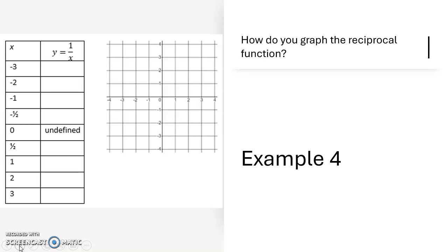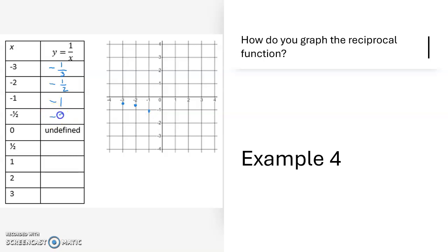If the x-coordinate is negative 3, the y-coordinate would be negative 1/3. If the x-coordinate is negative 2, the y-coordinate would be negative 1/2. If the x-coordinate is negative 1, the y-coordinate would also be negative 1 because that's the reciprocal of itself. If I go to negative 1/2, the y-coordinate would be the reciprocal of negative 1/2, which would be negative 2.